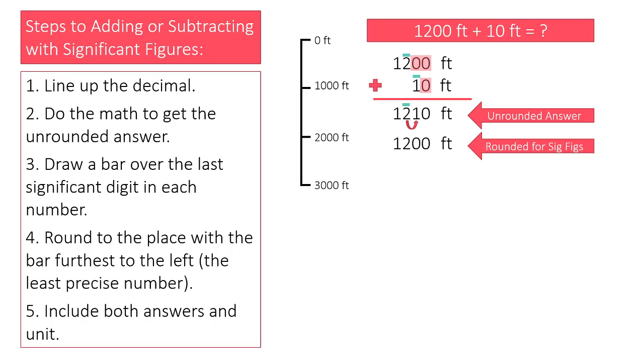The measuring device for this probably looks something like this. A rope with a mark every 1,000 feet. So the only number that I was really certain about in this measurement was the 1 in the thousands place. I estimated the 2 in the hundreds place. And if I wasn't sure about the hundreds place, I certainly can't estimate the tens or ones place. And I can't be sure that they are zeros as the number is written.